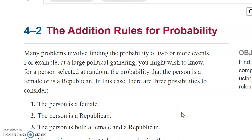Ladies and gentlemen, we are now going to start the discussion on Section 4-2, called the Addition Rules for Probability. The overview is that it's very simple to think about a single event, but many times we're interested in the probability of two or more events. The concept is that if you are thinking about two or more events, you have to know how to do the calculation, and that's based on set theory. We're going to talk about sets and event diagrams, which you may or may not have seen before, but I'm sure you'll find it not that difficult.